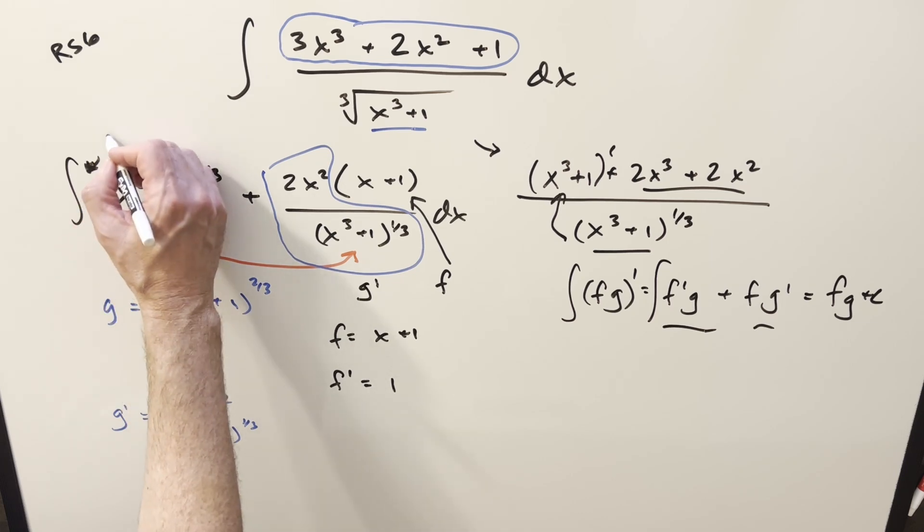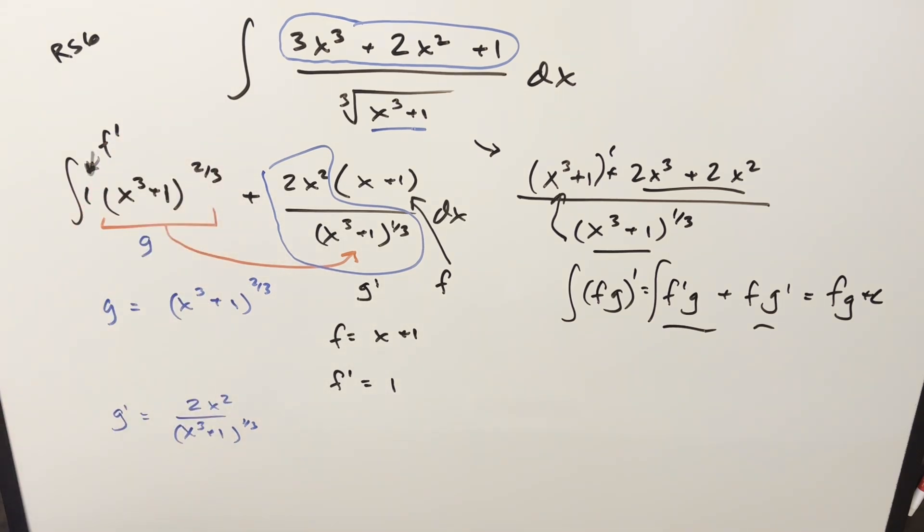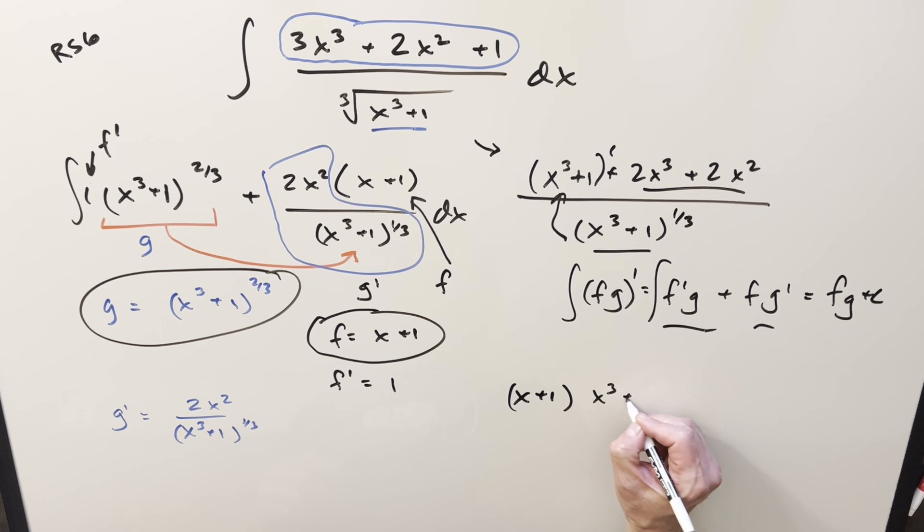And that's going to be our f prime right there. So as it turns out, this integral is in exactly this form here. We've got our f prime g plus f g prime. And so our solution to this is just going to be f times g. So for my final solution to this, we get just x plus 1 times x cubed plus 1, 2/3, add a plus c, and that's it.